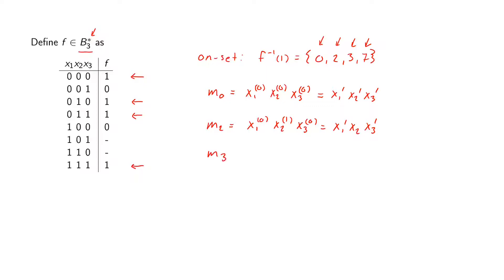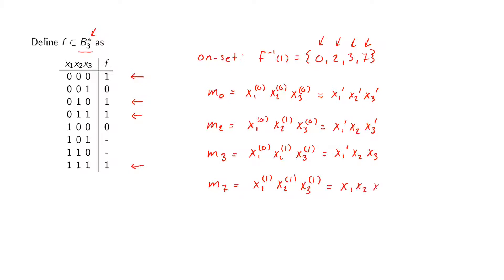The next one is m3, which we can write as x1 prime, x2, x3. And then we have m7, which equals x1, x2, x3. So all these are our min terms of the function, and these are all written as an AND product of terms that are either xi or xi prime. For all of these min terms we always have all of the different variables — x1, x2, and x3.